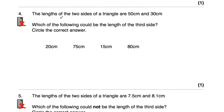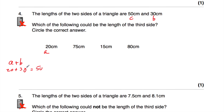Question number four says the lengths of two sides of a triangle are 50cm and 30cm. It doesn't say the shortest two sides, so 50cm could be the longest side. Which of the following could be the length of the third side? Let's start with 20cm. If we had 50cm, 30cm, and 20cm, then A and B are the two shorter sides. A plus B would be 20 plus 30, which equals 50 — so A plus B equals C. That can't exist.